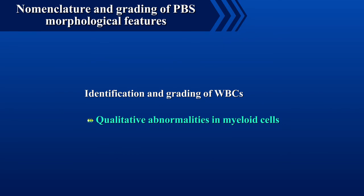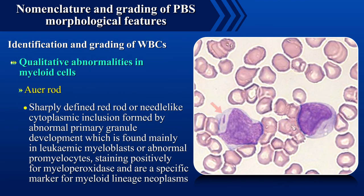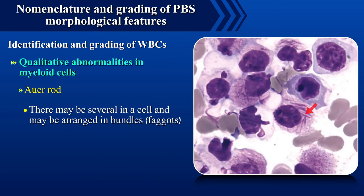Coming to qualitative abnormalities in myeloid cells, first we shall look at cytoplasmic abnormalities. Auer rods are sharply defined red rod or needle-like cytoplasmic inclusions formed by abnormal primary granule development, found mainly in leukemic myeloblasts or abnormal promyelocytes, staining positively for myeloperoxidase, and are a specific marker for myeloid lineage neoplasms. They may be several in a cell and may be arranged in bundles, in which case they are called faggots.